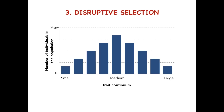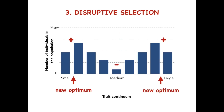The third mode of selection we will consider is disruptive selection. During disruptive selection, there is selection against the original optimum value and selection for both extremes. After selection, we see a bimodal distribution of the trait. This can have potentially interesting consequences for speciation if members exhibiting the contrasting values become reproductively isolated.